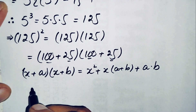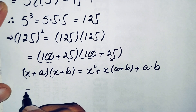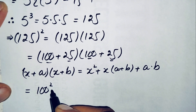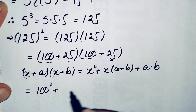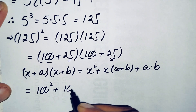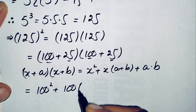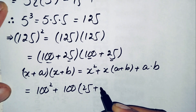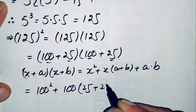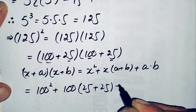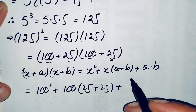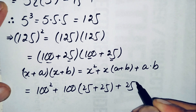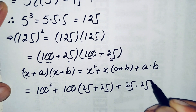Here x is 100, a is 25, and b is 25. So we get 100 squared, plus 100 times (25 + 25), plus 25 times 25. That gives 10,000 plus 100 times 50 plus 25 squared.